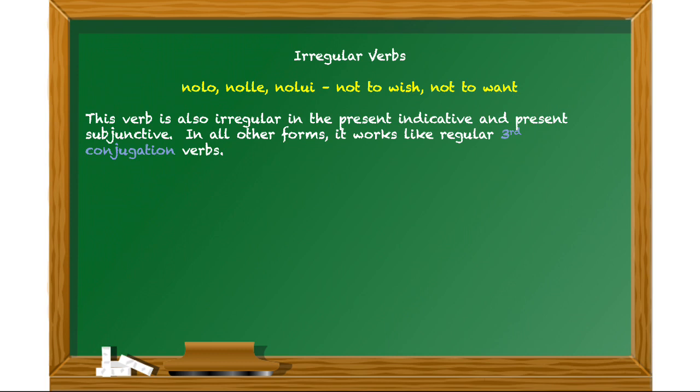The next one is related. It's nolo, nolle, nolui. And you can see and hear in those dictionary entries that that's very similar to volo. And it's the opposite, not to wish or not to want. Again, it's irregular only in the present indicative and present subjunctive. For all of its other forms, just like volo, it works like regular third conjugation.